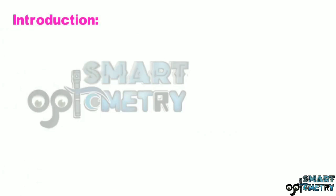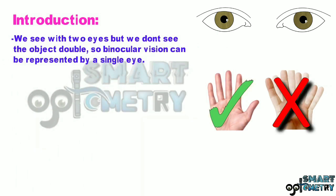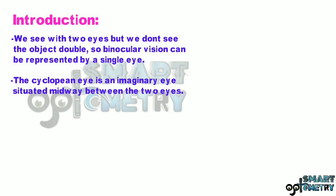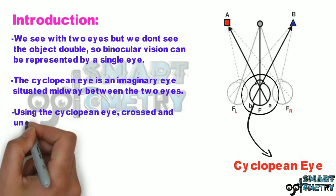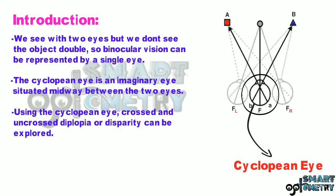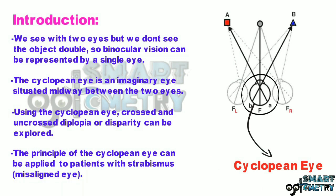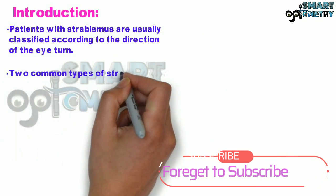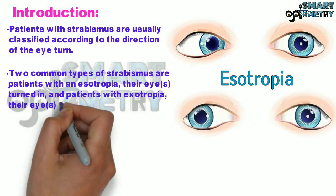Cyclopean Eye: We see with two eyes but do not see objects double, so binocular vision can be represented by a single eye. The cyclopean eye is an imaginary eye situated midway between the two eyes. Using the cyclopean eye, crossed and uncrossed diplopia or disparity can be explored. The principle of the cyclopean eye can be applied to patients with strabismus — those who have misalignment of eyes — who are classified according to the direction of the eye turn.